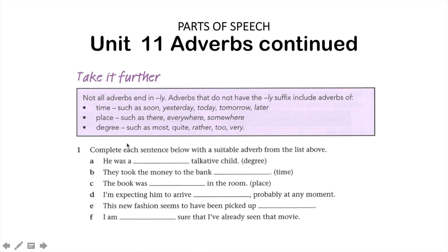For our last activity, the take it further, there's a little more information for you to read through, but the question requires you to complete each sentence with a suitable adverb from the list above. If we look at this first sentence: 'He was a something talkative child,' and we've been asked to use a word that describes degree — so it would be very or most. Both would be appropriate. For the next sentence: 'They took the money to the bank,' and we want a word that qualifies the time — so we'll use either soon, yesterday, today, tomorrow or later. Yesterday would probably be the most appropriate response. Don't forget that there is more than one possible response for a few of the sentences.